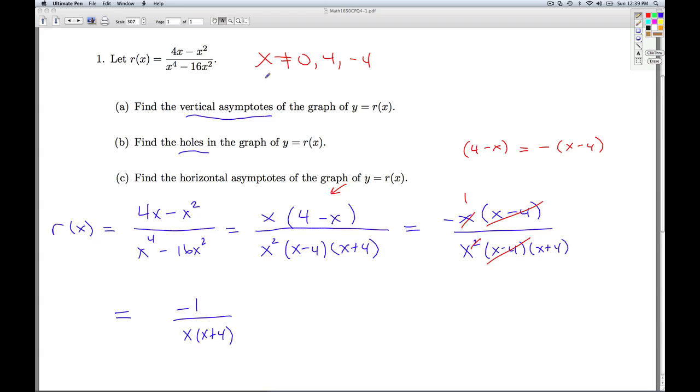So I go back and look at these. And the theorem from section 4.1 says, if the number we're throwing away still causes trouble in the reduced function, we get a vertical asymptote there. If the number we're throwing away no longer causes trouble, then it's a hole in the graph. So let's look at x equals 0. If I plug x equals 0 into the reduced function, I get negative 1 on top and I get 0 on the bottom. So it's still causing trouble. So we have a vertical asymptote, x equals 0.